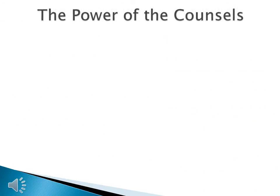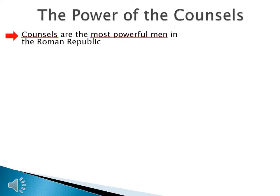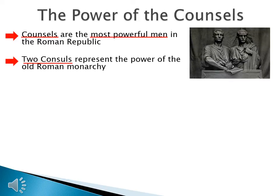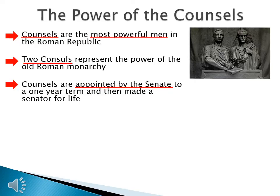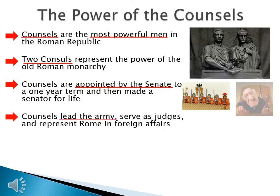The United States has three equal branches of government — not so in Rome. Councils are the most powerful men in the Roman Republic. Two councils represent the power of the old Roman monarchy, meaning they are treated like kings. Councils are appointed by the senate to a one-year term and then made senators for life, so they will always be involved in Roman government. Councils lead the army, serve as judges, and represent Rome in foreign affairs.